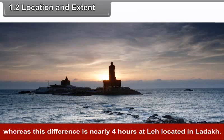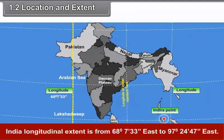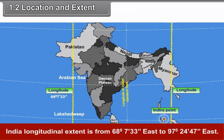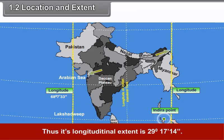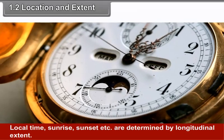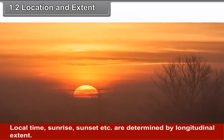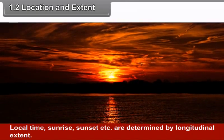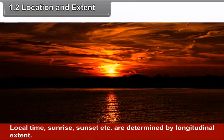The difference between the longest and shortest day near Kanyakumari is about 45 minutes, whereas the difference is nearly 4 hours at Leh, located in Ladakh. India's longitudinal extent is from 68 degrees 7 minutes 33 seconds east to 97 degrees 24 minutes 47 seconds east, giving a longitudinal extent of 29 degrees 17 minutes 14 seconds.